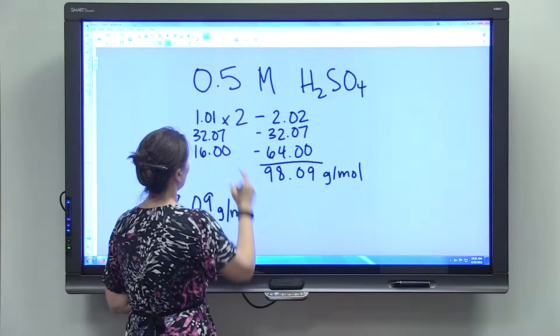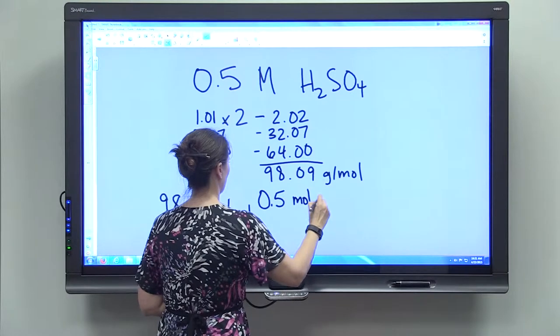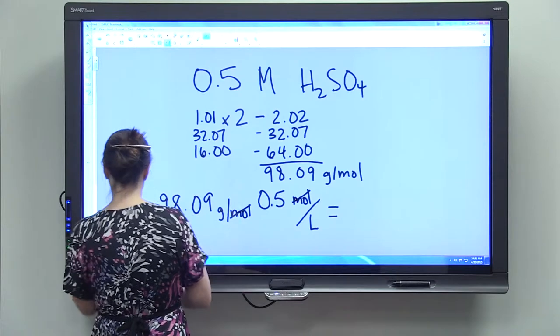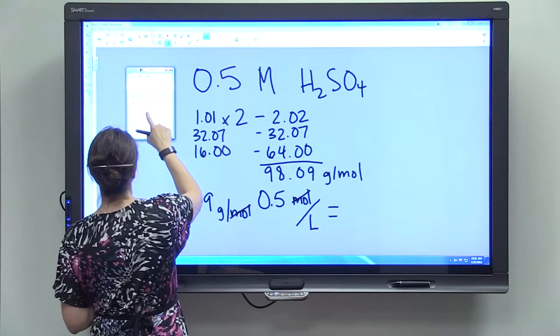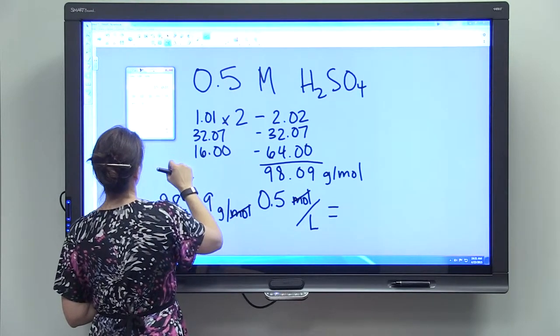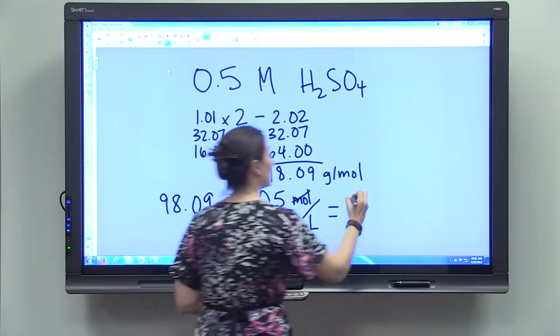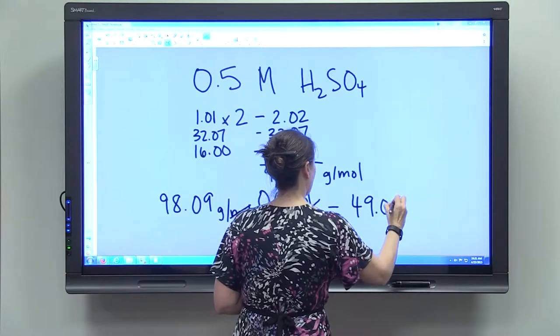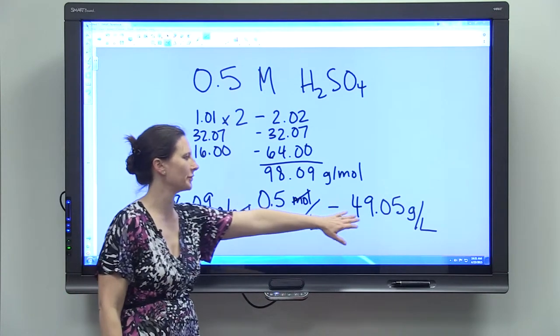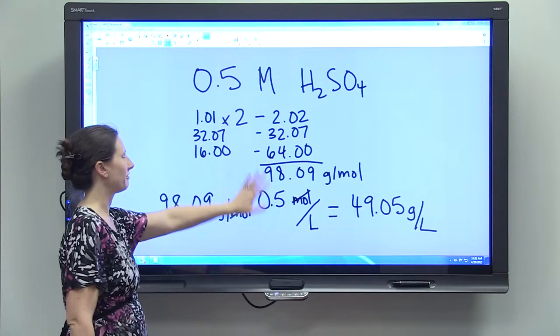And I want 0.5 moles per liter. The moles cancel. So I multiply 98.09 times 0.5 and I get 49.05 grams per liter. So I'd have to measure out 49.05 grams and add that to 1 liter to get a 0.5 molar solution.